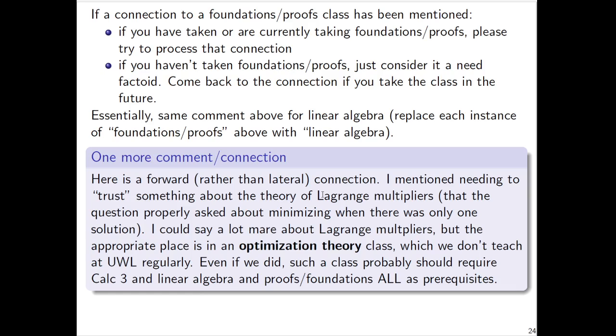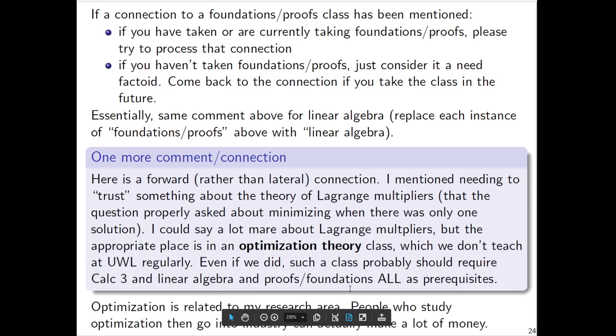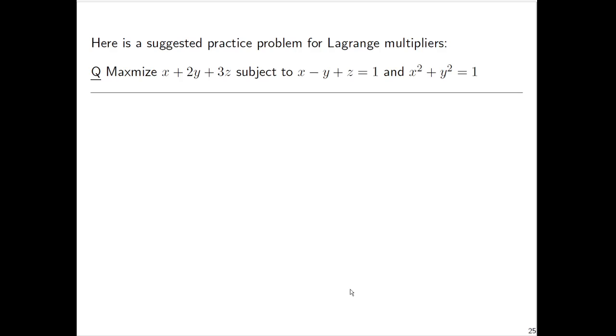Here's the thing. I should just comment that I've mentioned a lot of lateral connections, but there is something forward. This class is a prerequisite to some other class, not that we have at UWL, but I had mentioned, for instance, I need to trust something about the theory of Lagrange multipliers. I could say a lot about Lagrange multipliers, but the appropriate place to do that is in a future class called optimization theory. It's not a class that we teach regularly here. Even if we did, it would require Calc 3 and linear algebra and proofs, all as prerequisites. People who study this topic of optimization, if they don't become academics anyway, they can actually go into industry and make a lot of money.